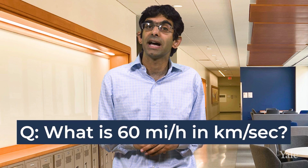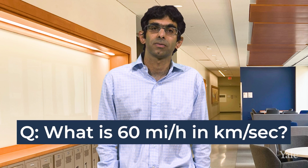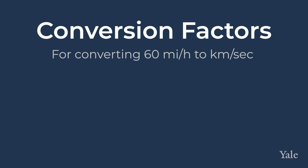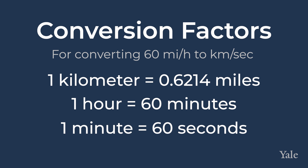Now let's try a challenging problem. We're driving to the beach at 60 miles per hour. What is that in kilometres per second? First, let's get our conversion factors. We know that one kilometre equals 0.6214 miles, that one hour equals 60 minutes, and that one minute equals 60 seconds.